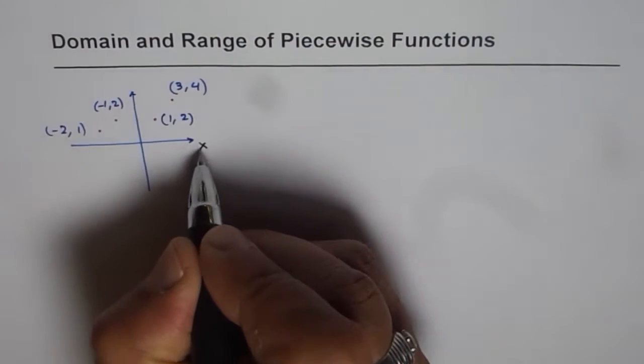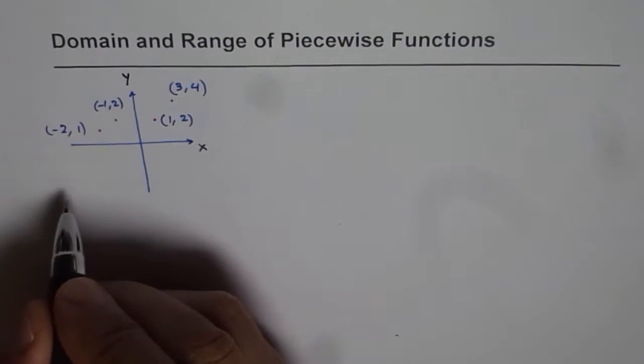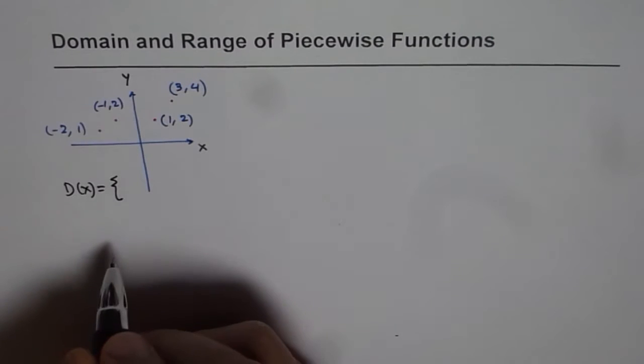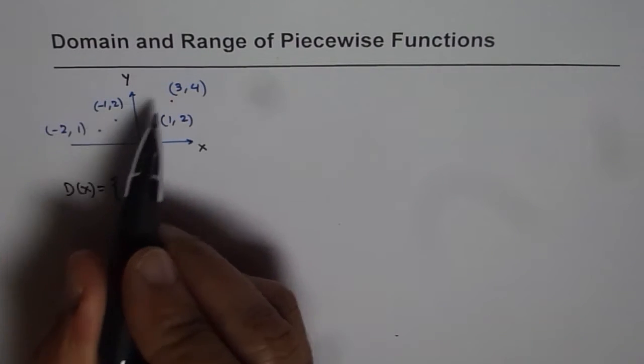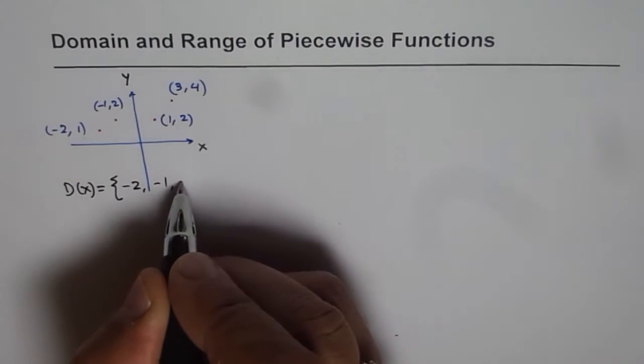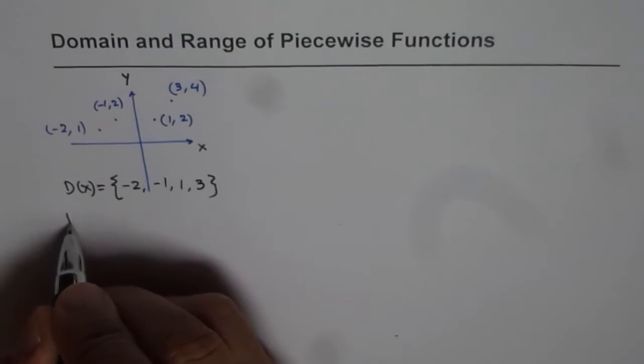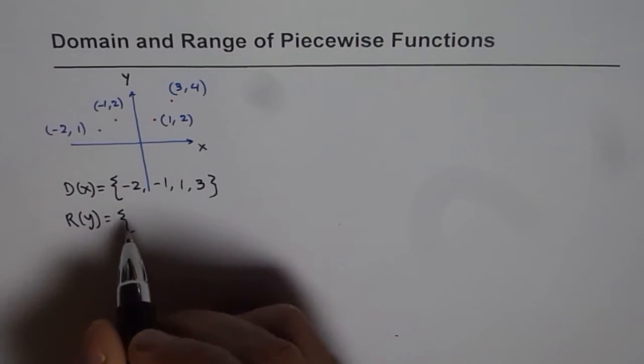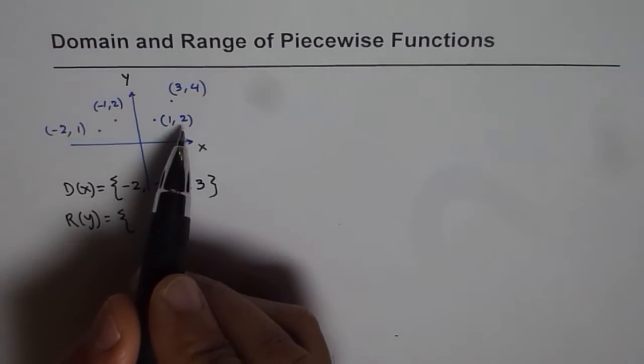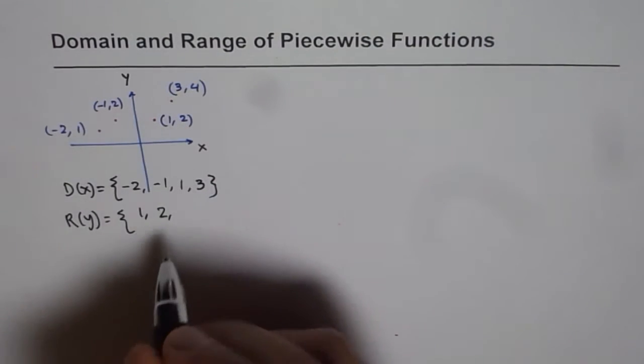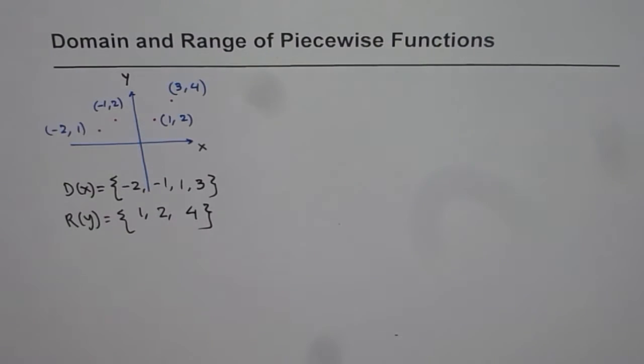That is the x axis and y axis. Now for such a function, domain is the set of x values. So we can write domain D(x) equals, within curly brackets which gives you set of elements: minus 2, minus 1, 1, and 3. These 4 x values become part of domain. How about range? Set of y values is the range for this function, and that is 1, 2, 2, and 4. So we can write 1, 2 - no need to repeat 2, it should be written only once - so it is 1, 2, and 4. That becomes the range for the given function. That is how you can write domain and range of a function which is a scatter plot.